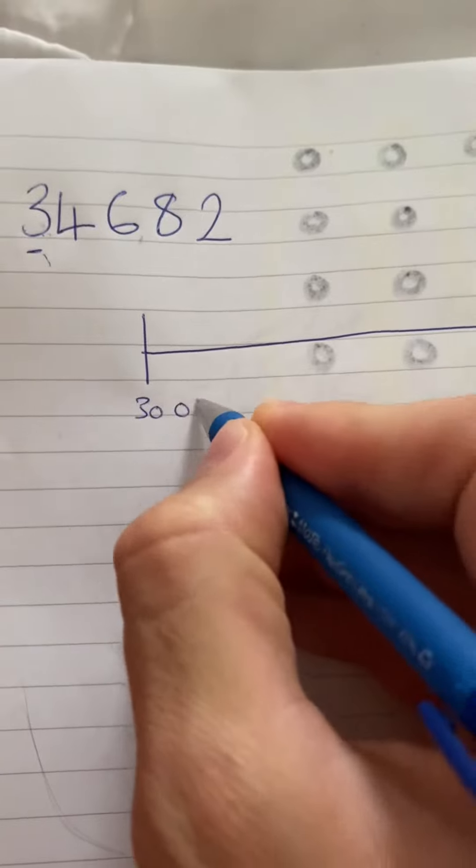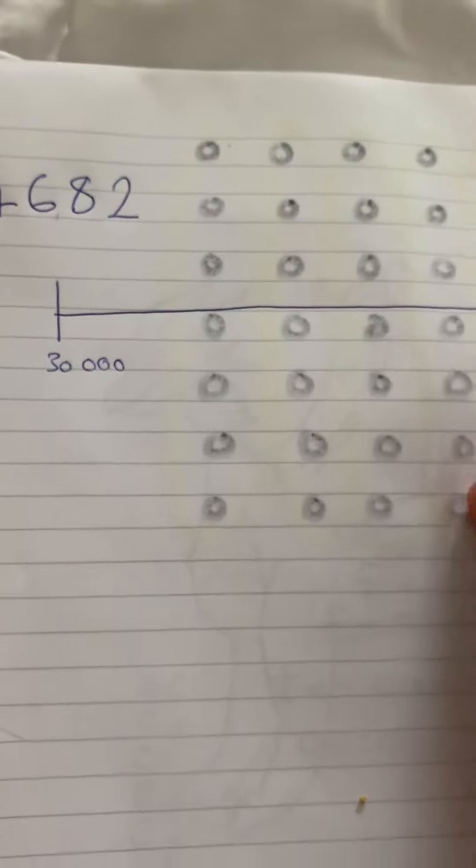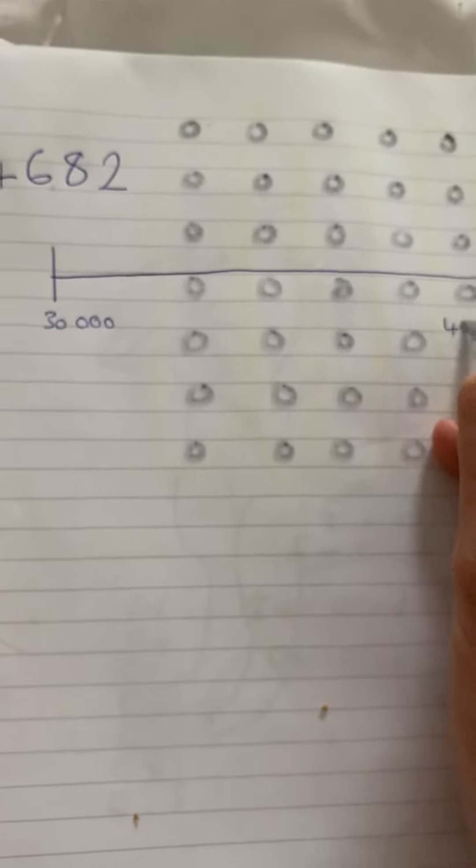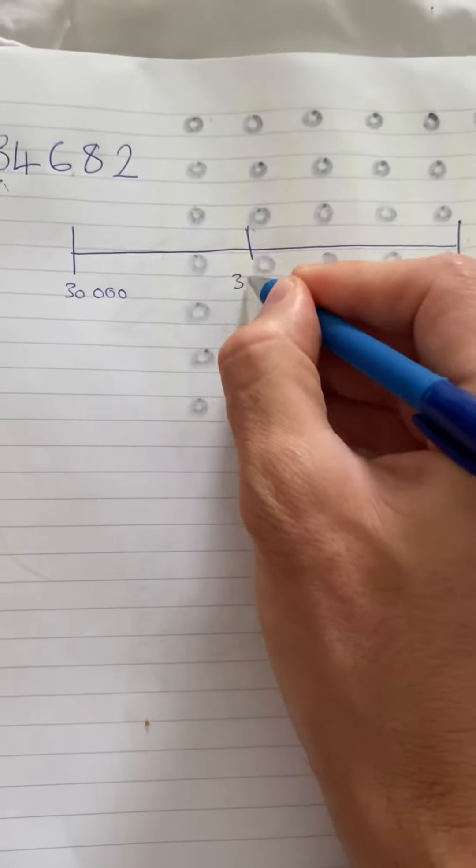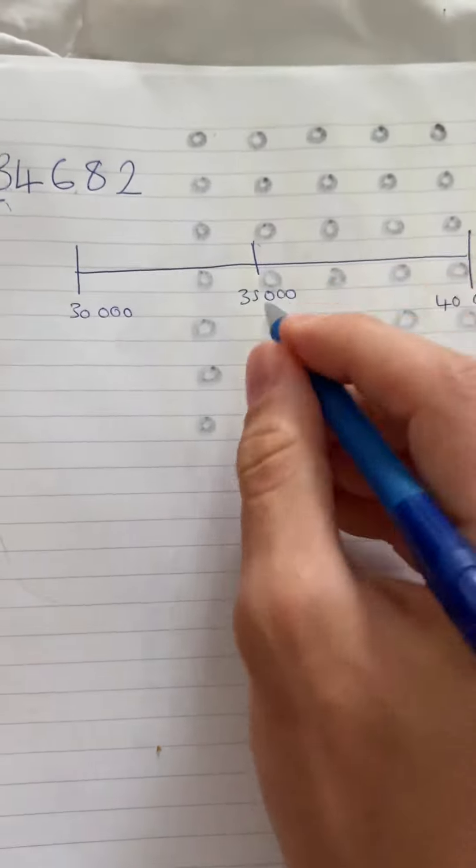So again, number line, 30,000, 40,000. Sorry about the dots on my page. That's for another problem. We know halfway between is 35,000.